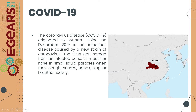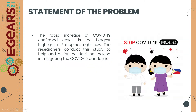An infected person can spread the virus by sneezing, coughing, speaking, singing, or breathing heavily. The rapid increase of COVID-19 confirmed cases in the Philippines is the biggest highlight right now, so the researchers conducted this study to help and assist decision-making in mitigating the COVID-19 pandemic, especially in Agusan del Norte.